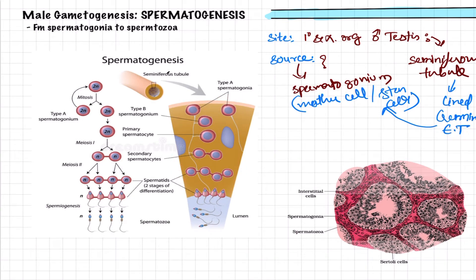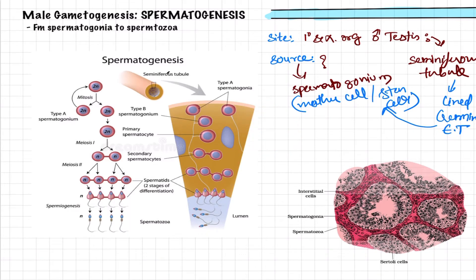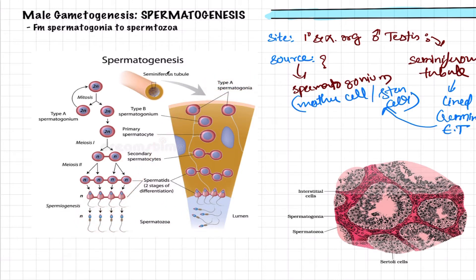To be specific, there are also Sertoli cells present. Sertoli cells are the helping cells, or nurse cells, and we will be discussing them in detail later. Now let us proceed to understand how the spermatogonium cells form spermatozoa.